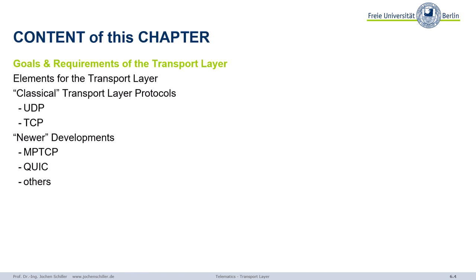The content of this chapter: first I'll go through the basic goals and requirements of transport layers, show some basic elements independent of internet or not. Then I'll cover the classical transport layer protocols — TCP, which has been around since 1974, and UDP, the most prominent classical protocols. Then I'll cover newer developments like Multipath TCP and QUIC.